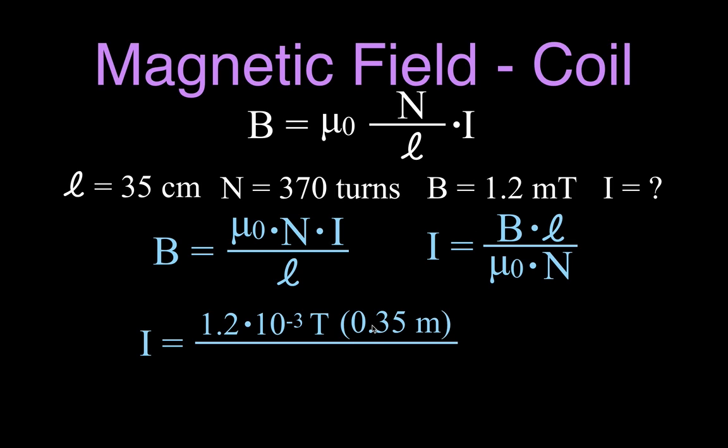And I have my length of 0.35 meters, 35 centimeters, 0.35 meters, divide by my permeability of free space, 4π×10⁻⁷ tesla meter per ampere, times 370 windings. And I come up with the current in that coil to give me that magnetic field with all the other parameters must be 0.90 amperes.